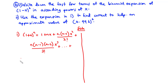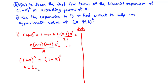Comparing (1 plus x)^n with (1 minus x)^6, we identify n equals 6 and replace x with negative x throughout. Wherever x appears in the expansion, we substitute negative x.